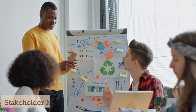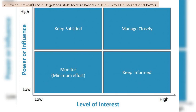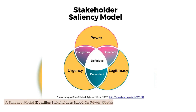Stakeholder mapping. A power-interest grid categorizes stakeholders based on their level of interest and power. A salience model identifies stakeholders based on power, legitimacy, and urgency.